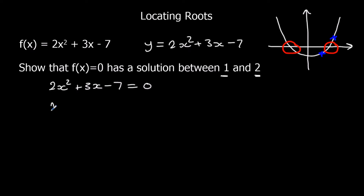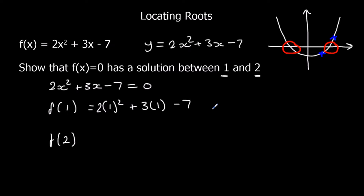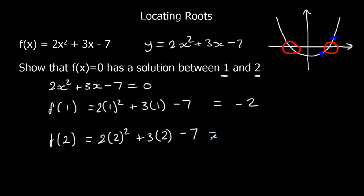So if we substitute 1 into the function and substitute 2 into the function, if we get a change of sign, we have located the root. So f(1) = 2×1² + 3×1 - 7, and f(2) = 2×2² + 3×2 - 7. Here we get -2, and here we get +7. So we have got a change of sign, therefore there's a solution between 1 and 2.